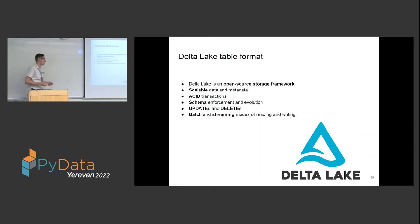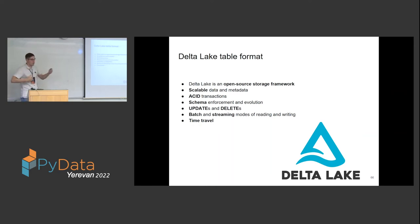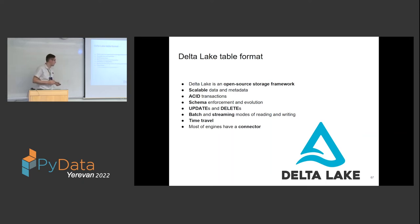Delta Lake has additional features such as time travel, which means that as you write more data over time, you can actually look at the state of the dataset as it was at a certain point in the past. You can run queries to compare the state one year ago with today and run analysis on top of that. Most engines such as Apache Spark, Trino, and Hive have connectors for Delta Lake.